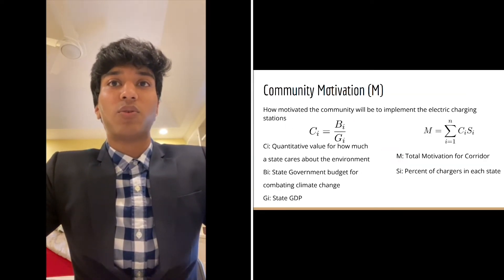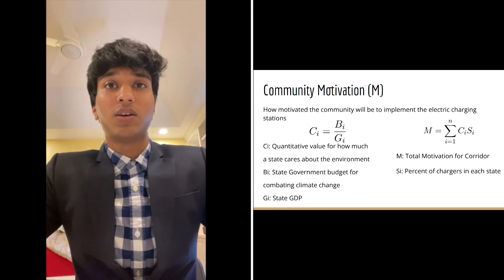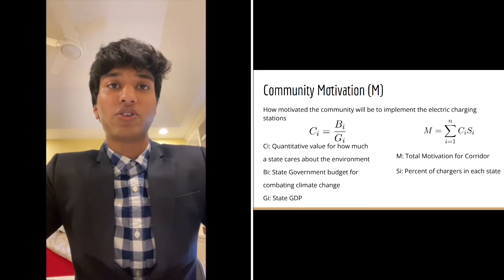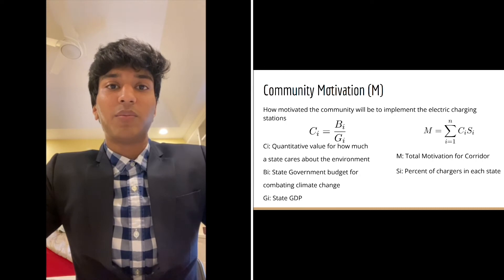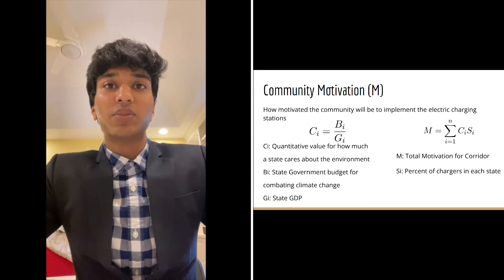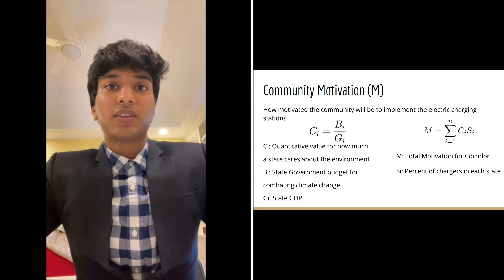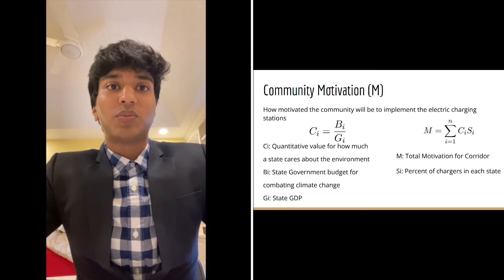Community motivation was chosen because support from the community would facilitate the implementation of such a high-scale project by state officials. To calculate such, we focused on the percent of chargers that would be located in the state as that would directly correlate to how much revenue the state would get from those chargers, and the relative size of the state's environmental budget to its GDP as that would determine how much the state is willing to allocate for the environment. And to calculate the second part, we took the environmental budget for each state and divided it by the GDP of that state. As the community members elect the governors and state officials in charge in those respective states, the size of the environmental budget would actually reflect the community's motivation to turn to green resources. We did these calculations for every state on each route and summed the products of our two factors for each state to get a community motivation index for each corridor.